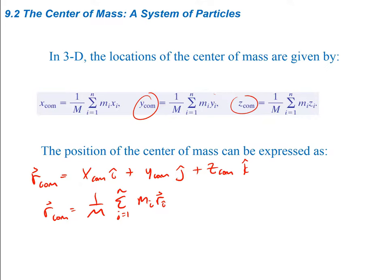Just to clarify what this r vector is: if these are our x, y, and z axes, and we have some particle at some point with components of z, y, and x, then r is the vector from the origin to wherever the particle is — that's all it is.